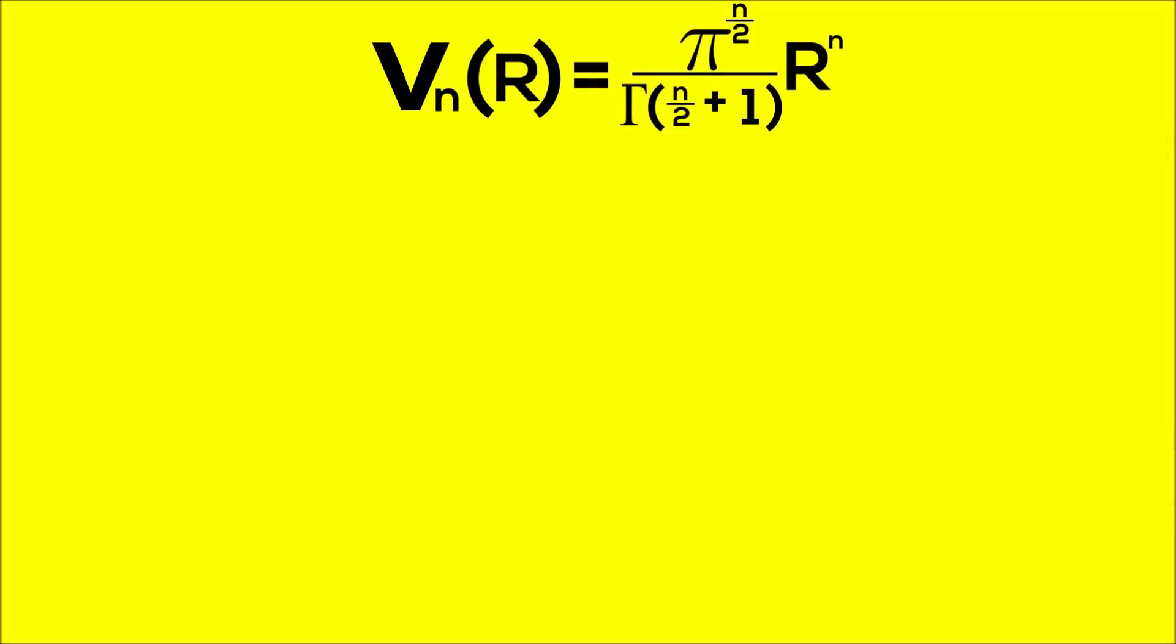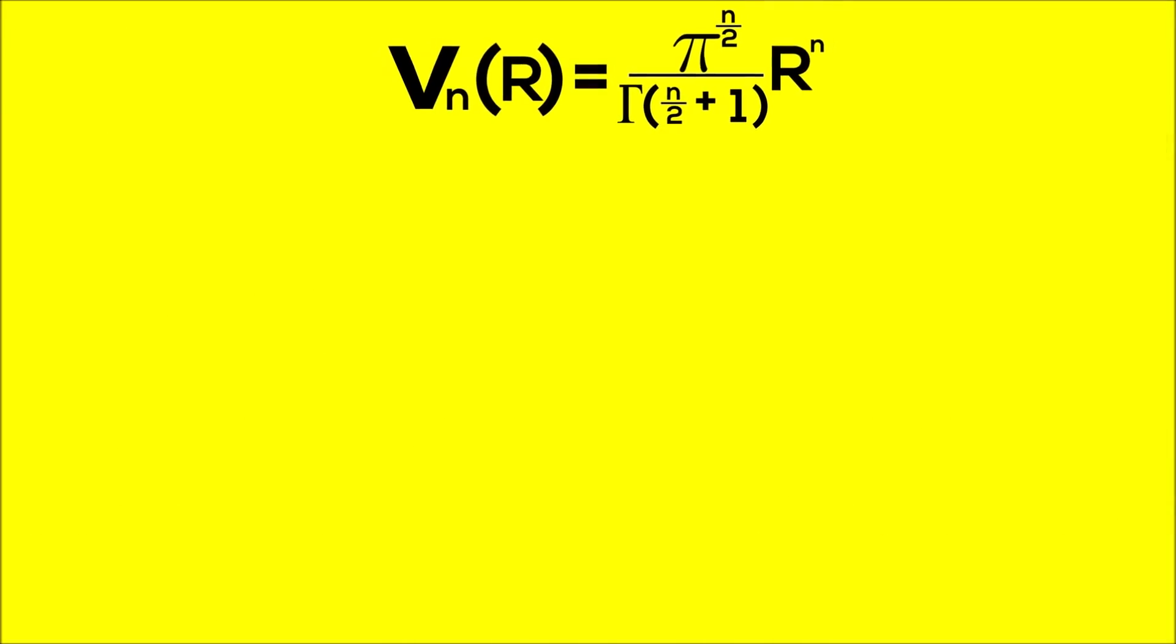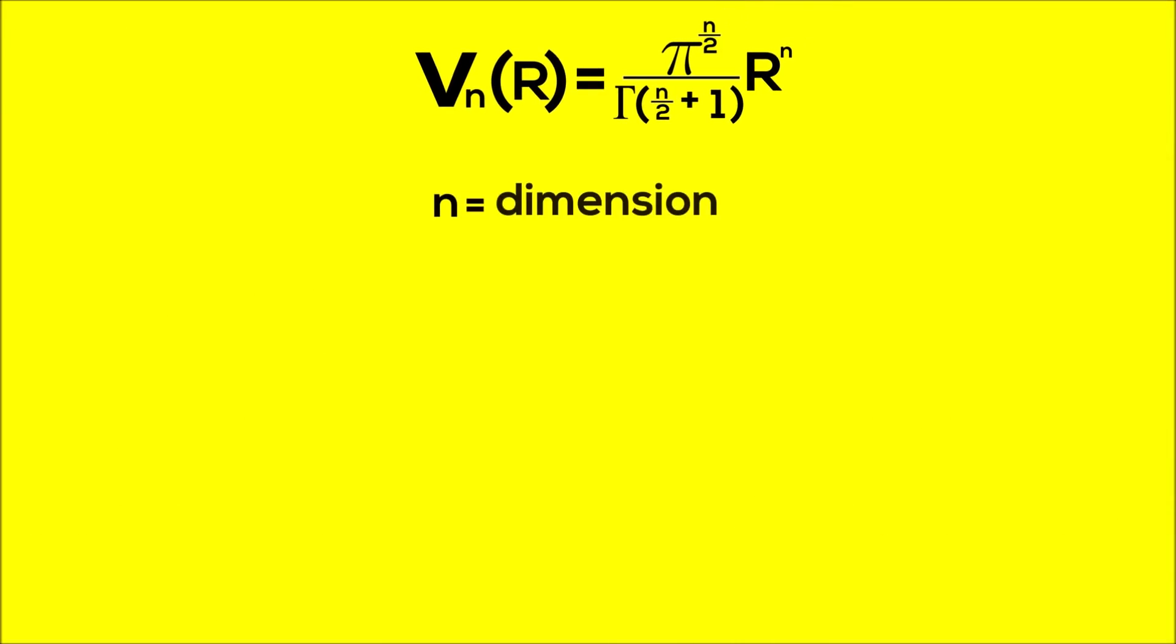So again, here's the equation for determining the volume of any sphere, which I'll keep up top. n represents the dimension we're in, r is the radius, and here on the denominator is the gamma function. So let's first check that this works for two dimensions, where the formula should output pi r squared, or the area of a circle.